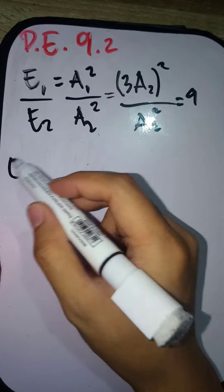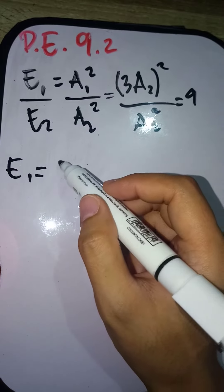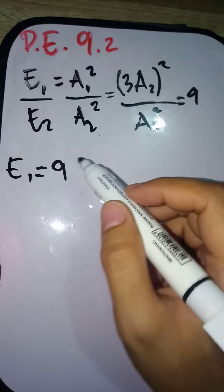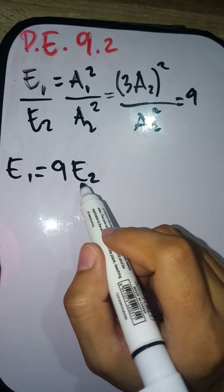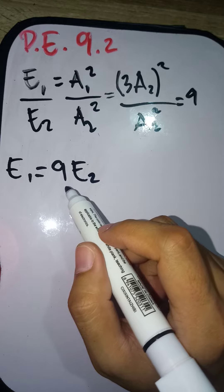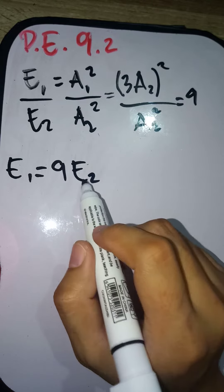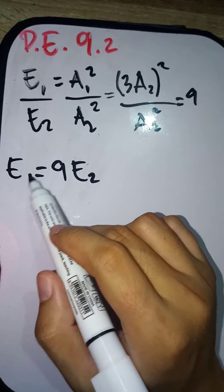So the energy of the first wave is actually 9 times greater than the second energy, or the energy of the second wave. So the energy of the first wave is 9 times greater.